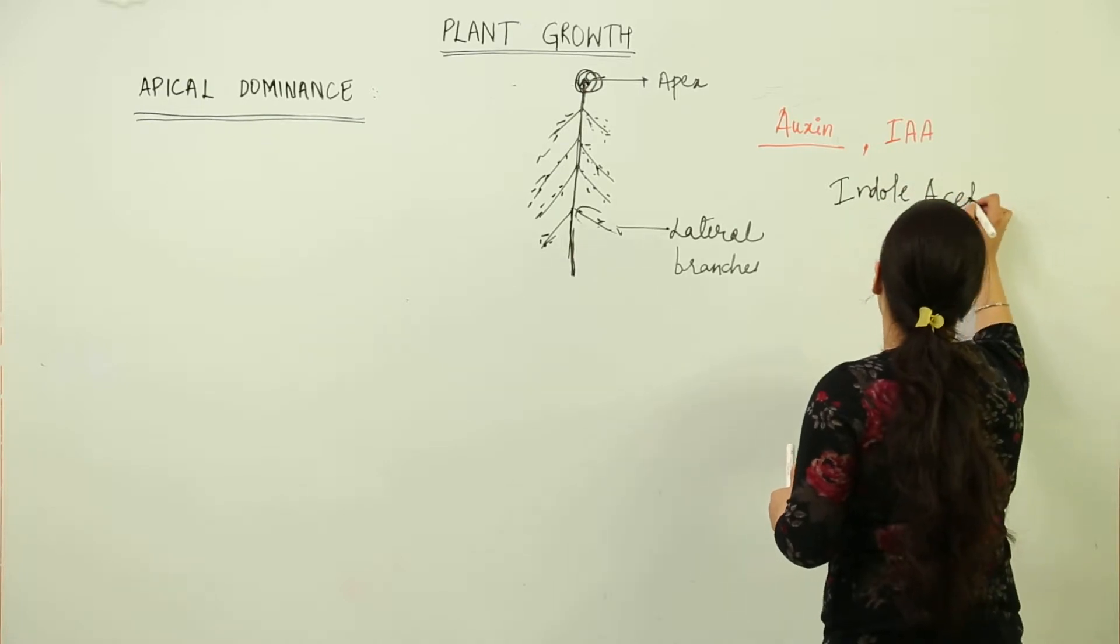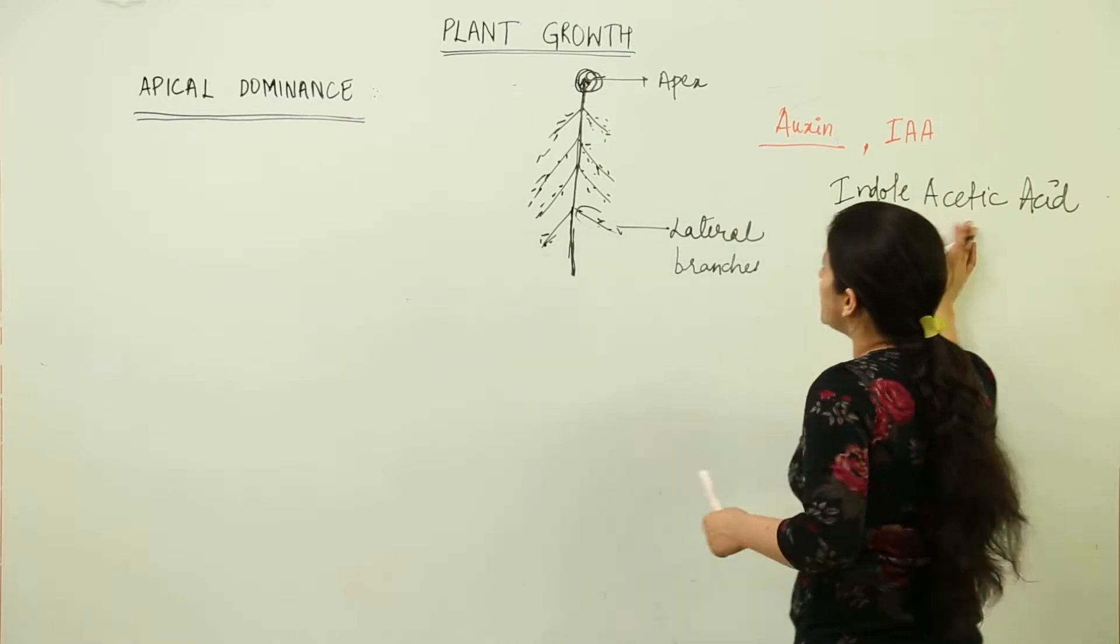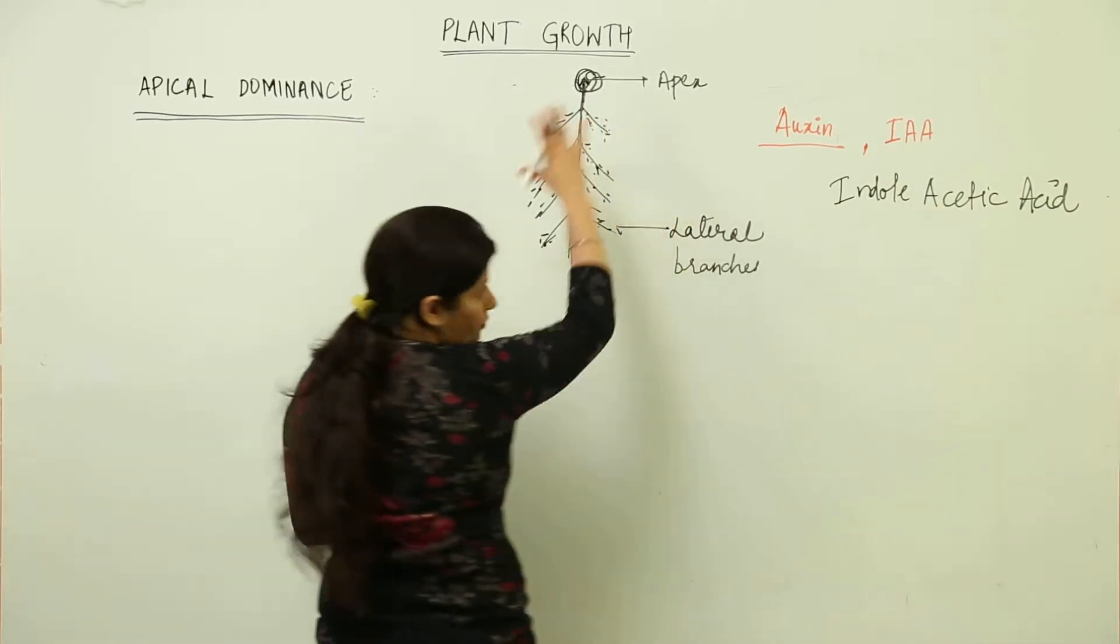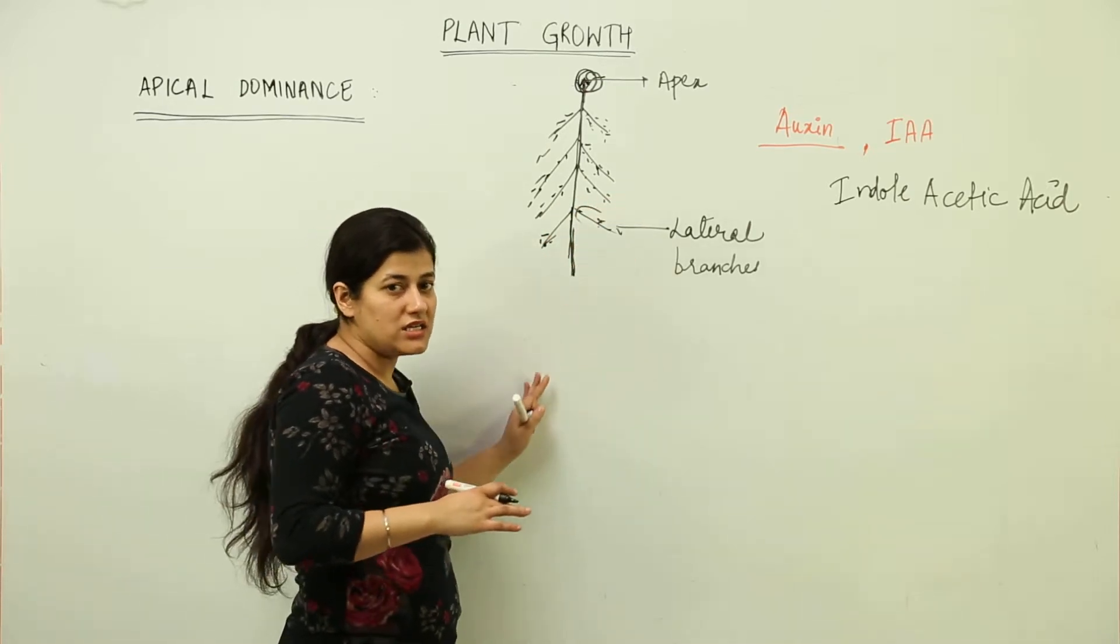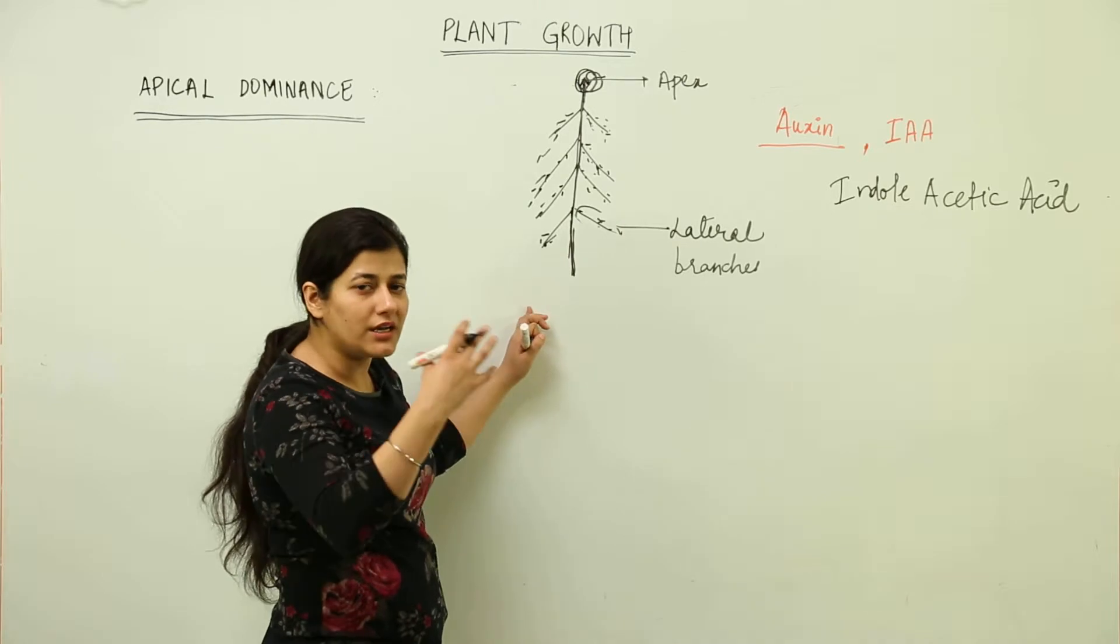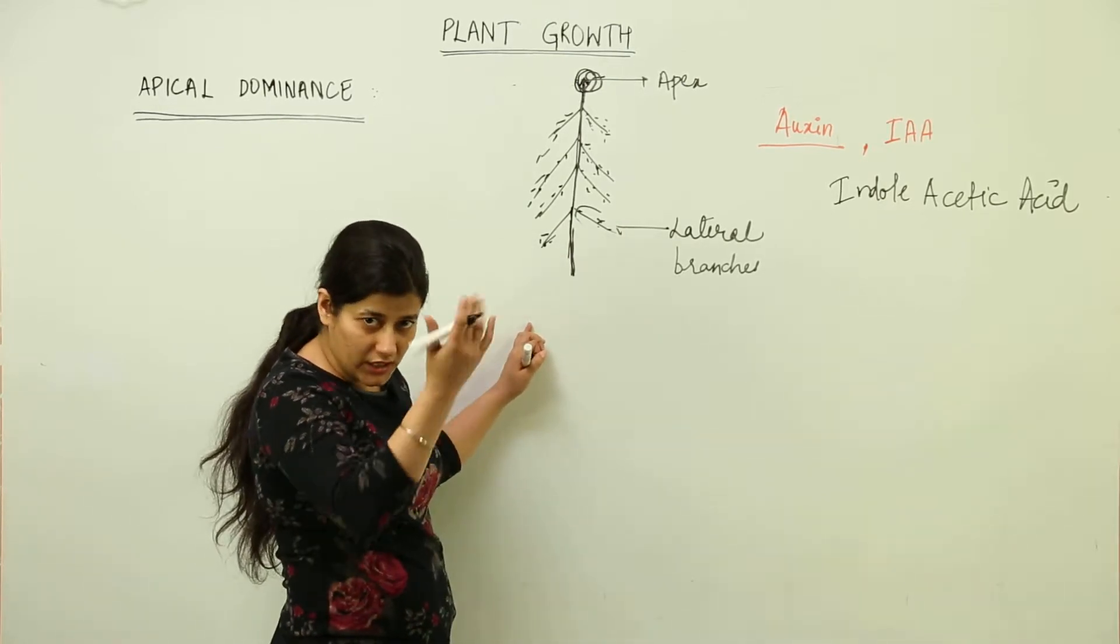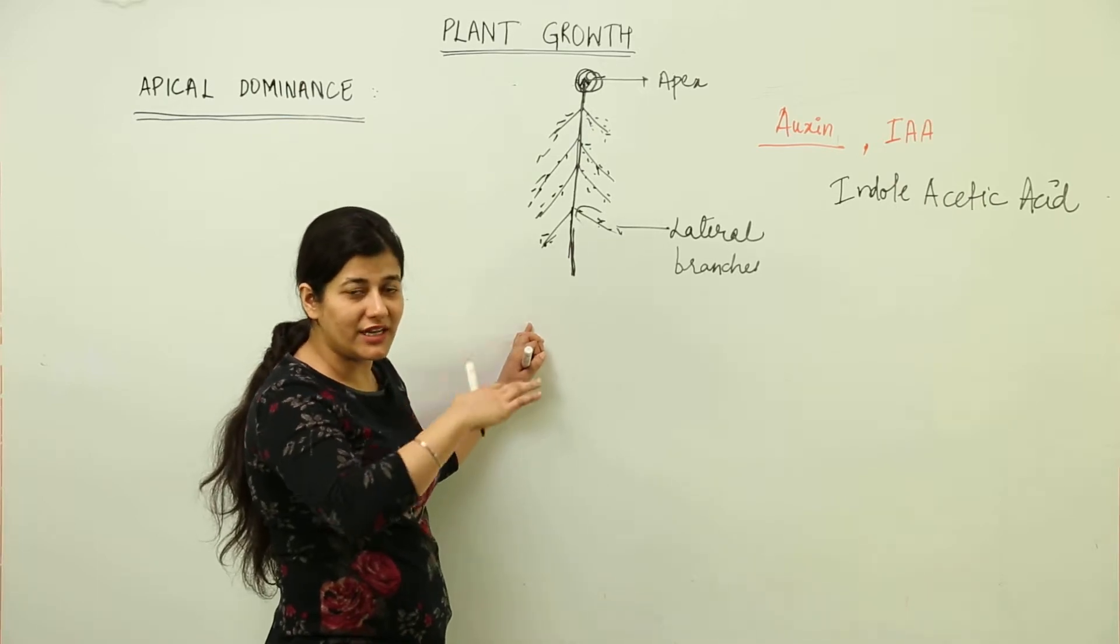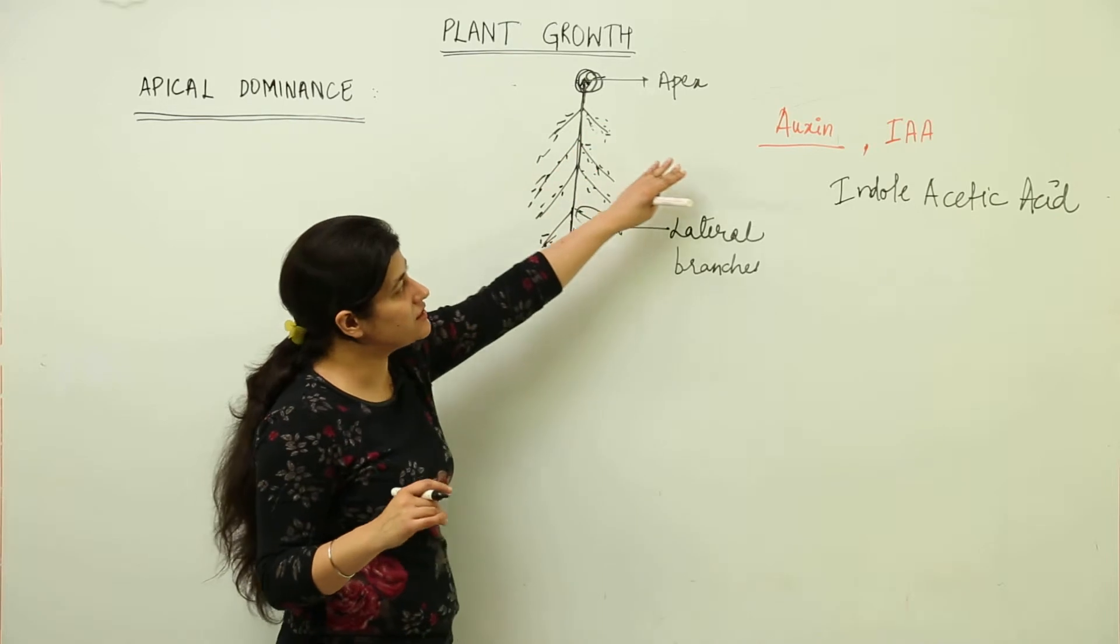Indole acetic acid is the auxin responsible for the process in which the plant rises quite higher. It is for vertical rising of the plant so that it can rise further, move upwards and show growth in height, so it can take more light and perform better photosynthetic activities. That is done by auxin.